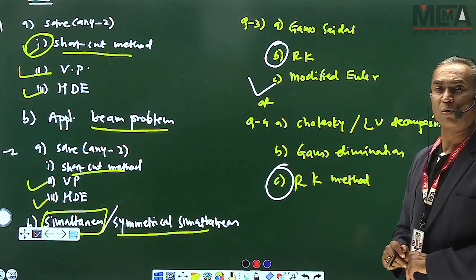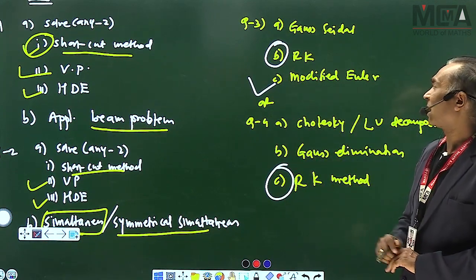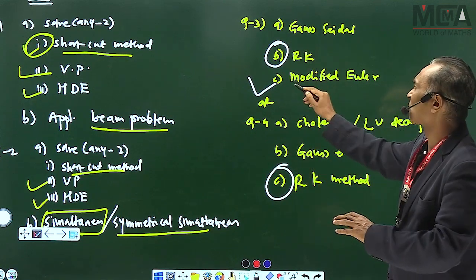Modified Euler is also good. That is also in the exam. Now, at least, do these two topics: RK and Modified. Here, 10 marks will be done.